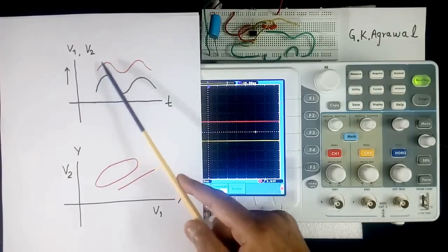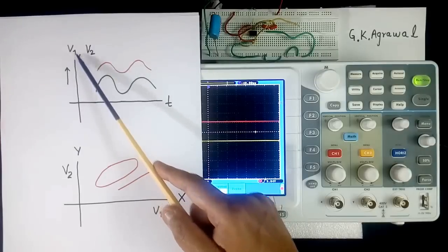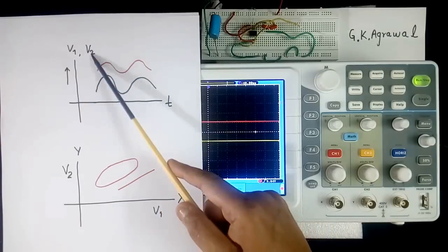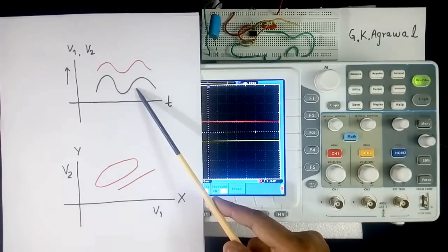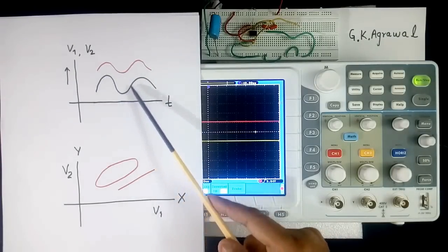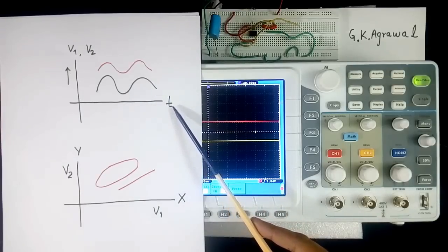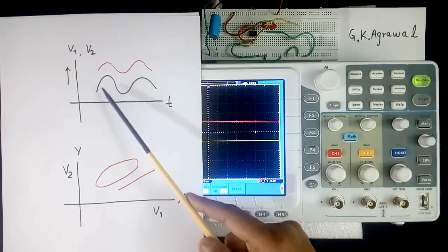So you will get 2 wave shapes. One for V1. Say this red color. Another for V2. Say black color. Or it may be same color. So these voltage signals are time dependent. This is time dependent plot.